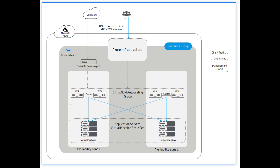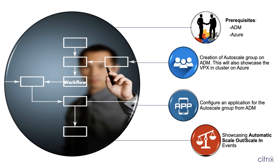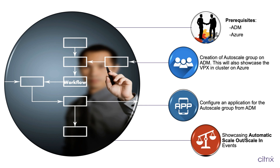Let us proceed with seeing how to do it. To ensure an end-to-end configuration of our autoscaling solution, there are primarily four major stages: firstly, fulfill the prerequisites at ADM as well as Azure side; secondly, create an autoscale group; third, configure an application; and last, test the scale-in and scale-out capability.